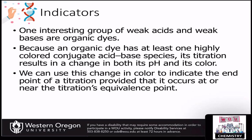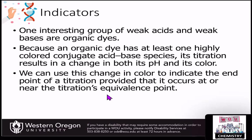For acids and bases, the indicators are typically going to be organic dyes. This is because organic dyes typically have one highly colored conjugate acid-base species. When you do a titration with this, it results in a change in both the pH and the color of the molecule. At that change window, you can see this color change. If you know the characteristics of these dyes, you can use them to help indicate the endpoint of your titration, provided that the color change of the indicator occurs where your equivalence point should be.